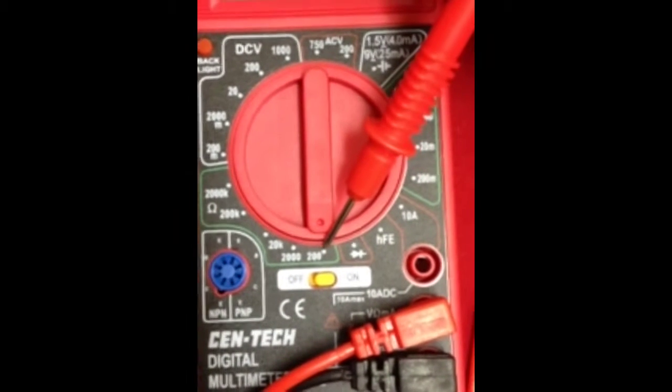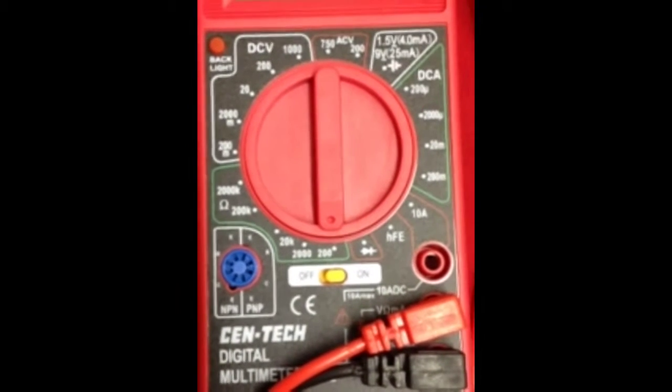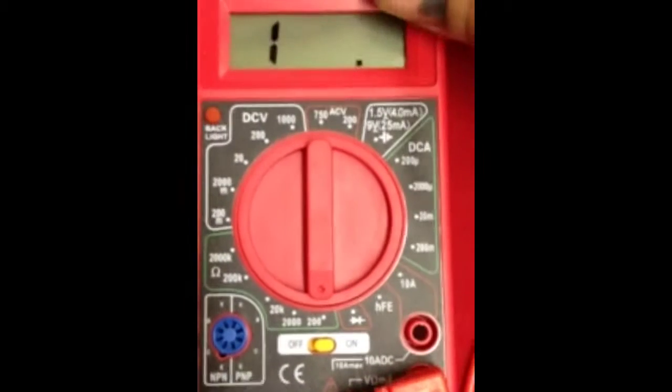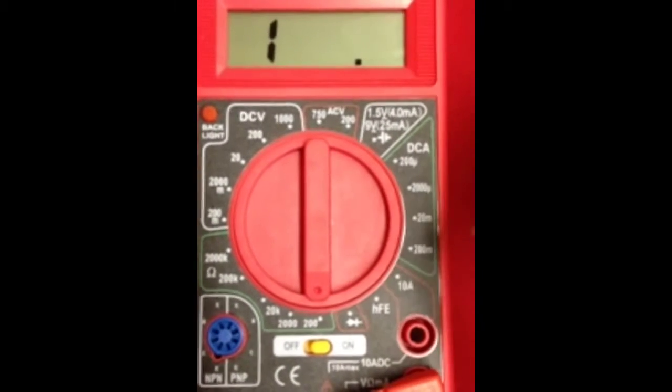Usually on the 200 ohm scale is good for checking switches and stuff because your meter will just read straight through.